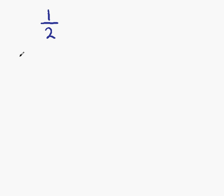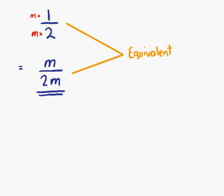Instead of multiplying by a number, we're going to take this a step further and multiply by a letter. We're going to multiply the bottom by m. If we want an equivalent fraction, if we multiply the denominator by m, then we must also multiply the numerator by m. m times 1 is m, and m times 2 gives us 2m. Our new fraction, m over 2m, is equivalent to 1 half.